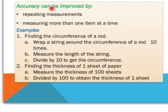Accuracy can be improved by two methods. The first one is repeating measurements. For example, when you measure the length of a rod, don't just measure it once, measure it at least twice. The second measurement will serve as a check on the first one.